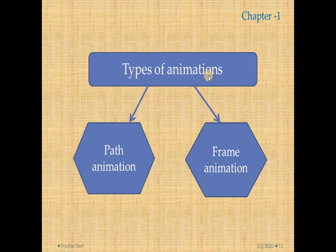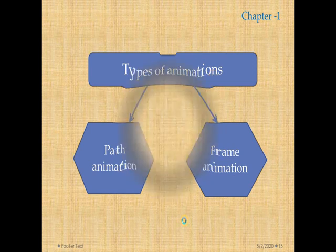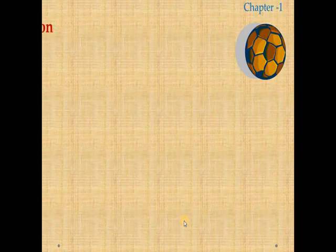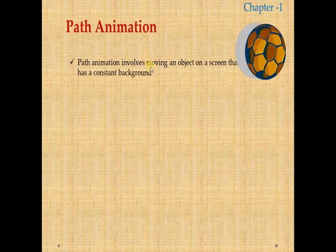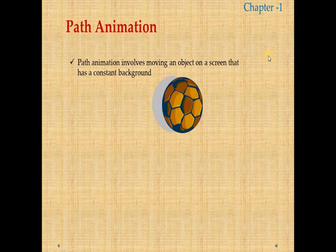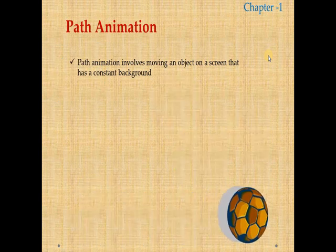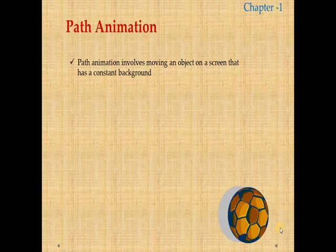Apart from that, there are types of animation: one is path animation and another is frame animation. Path animation involves moving an object on the screen with a constant background. Look at this ball — the ball alone moves along a path. This type of animation is called path animation.